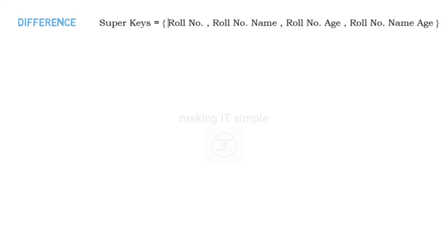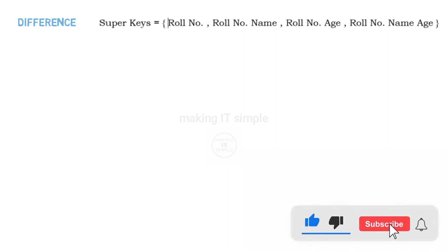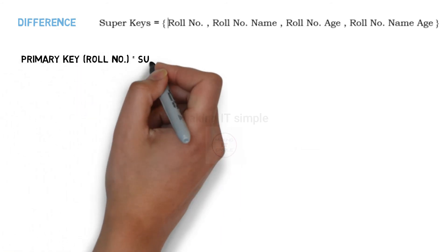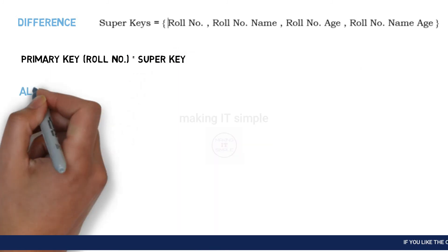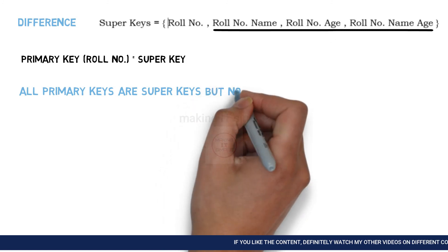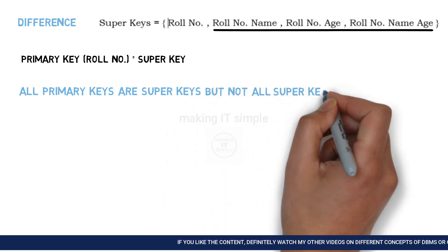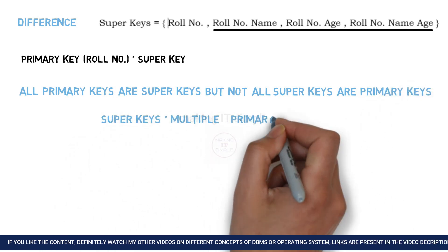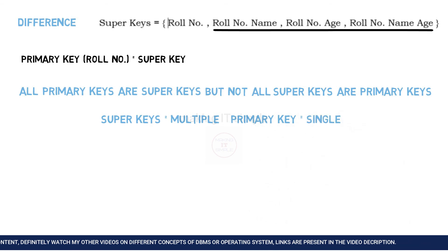We saw the definition of super key — it is similar to the definition of primary key, so what are the differences between these two? From this example we can state some differences. A primary key, which is role number in this example, can be a super key — so all primary keys are super keys. But not all super keys are primary keys. Another difference is that there can be multiple super keys, but there is just one primary key in a relation or table.